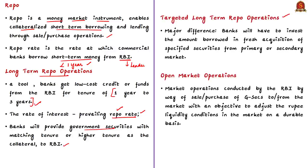Targeted long-term repo operations (TLTRO) are similar to LTRO, but with one significant difference: under TLTRO, banks must invest the amount borrowed from RBI in fresh acquisition of specified securities from primary or secondary markets. The RBI will specify that a portion of funds borrowed shall be deployed in securities issued by specific targeted players — for example, 50% of funds may need to be deployed in securities issued by microfinance institutions or non-banking financial companies. The RBI may also provide a timeline for deployment in these specified securities.